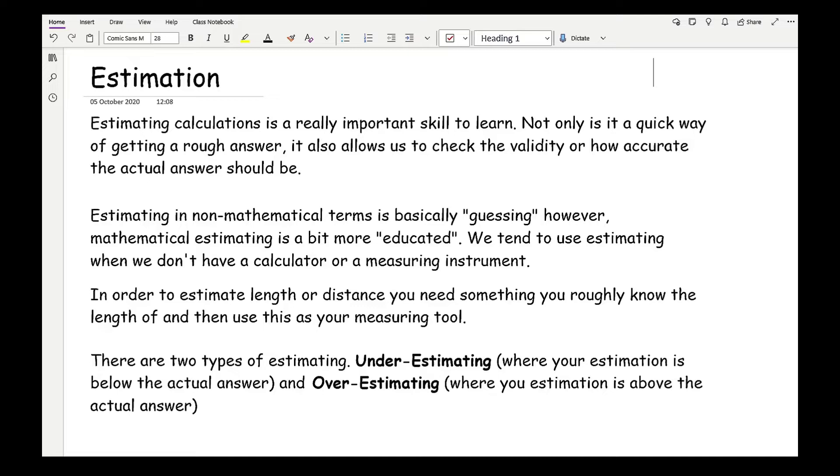There are two types of estimating. One is what we call underestimating, where your estimation is below the actual answer, and the other is overestimating, where your estimation is above the actual answer.